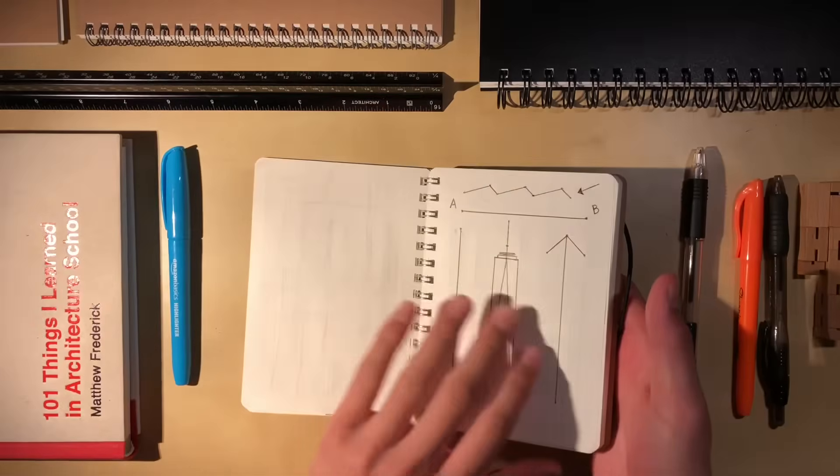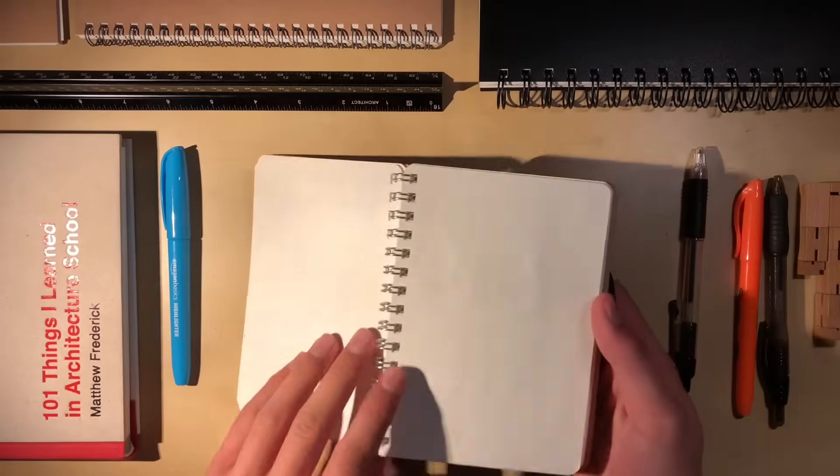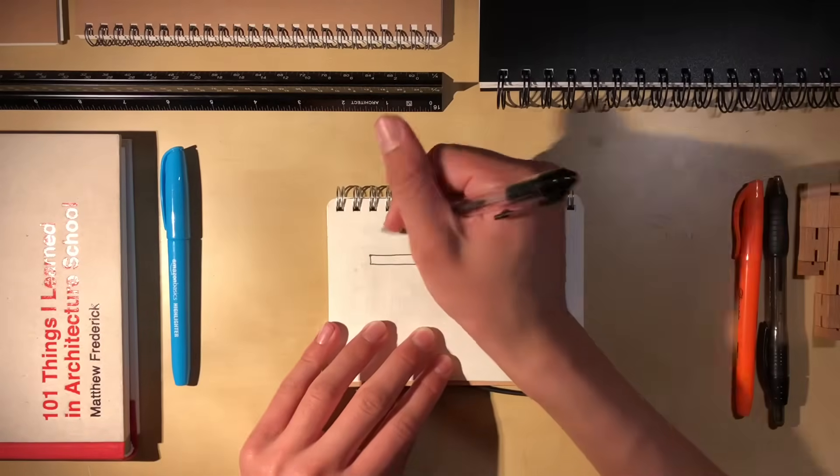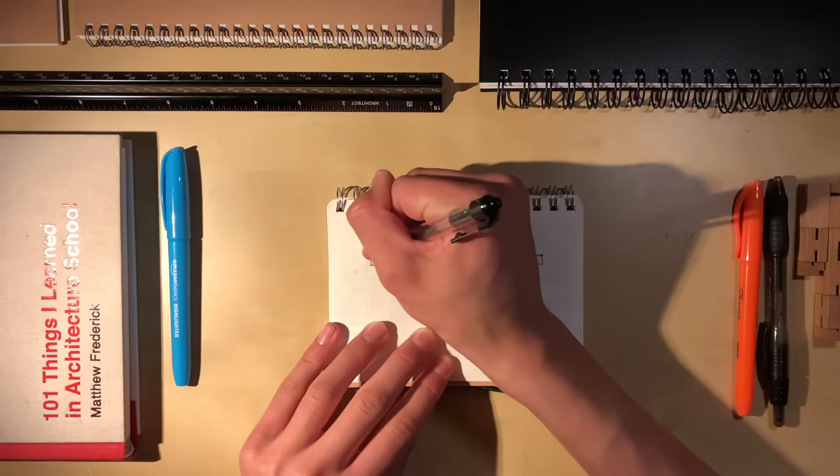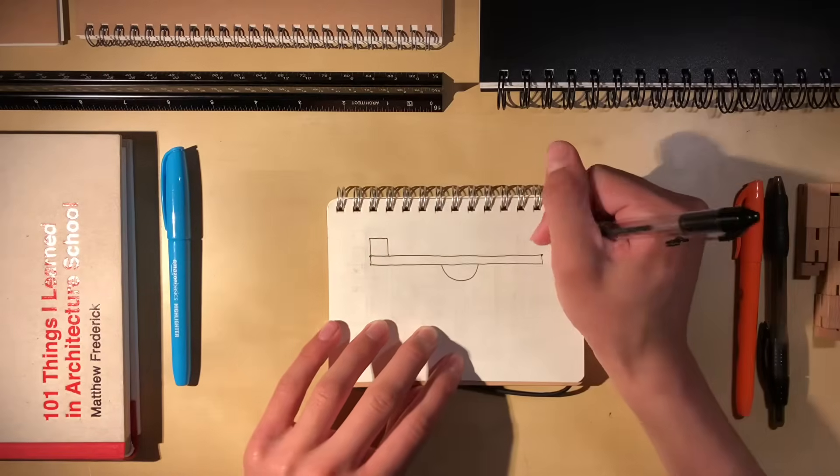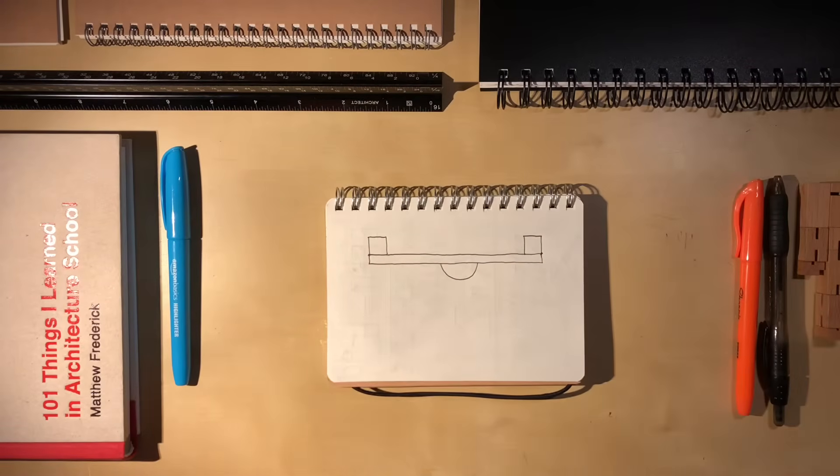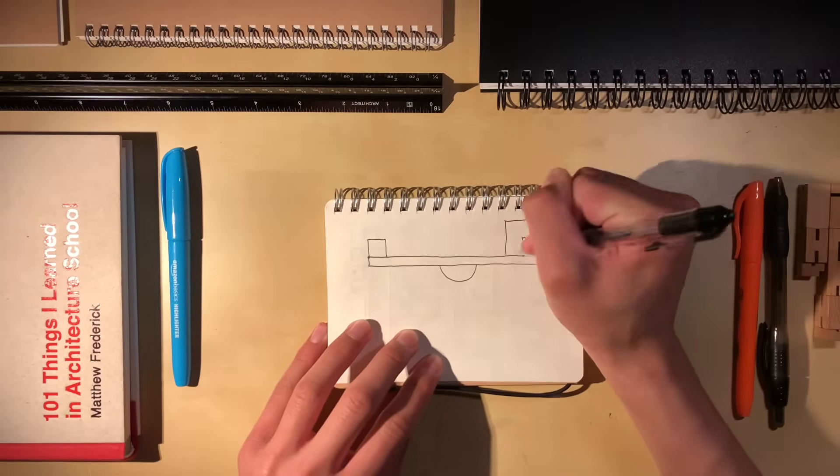In last week's lesson, we briefly discussed how symmetry produces complete balance in architecture. While it is true that the use of symmetry is the easiest way to achieve balance in design in general, there is also another method: asymmetry.